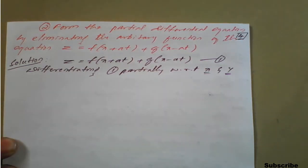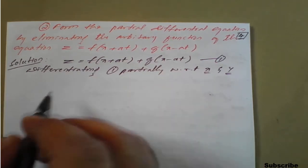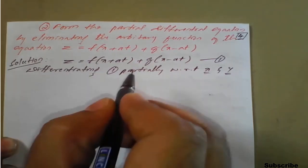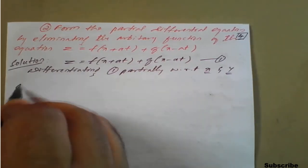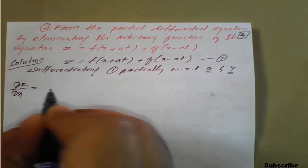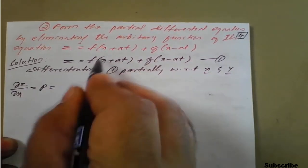In the previous example, there was only one function phi, so we took the partial derivative only once. But here, with two functions, we differentiate twice — with respect to both x and t. First, differentiating z with respect to x gives ∂z/∂x, which is denoted as p.